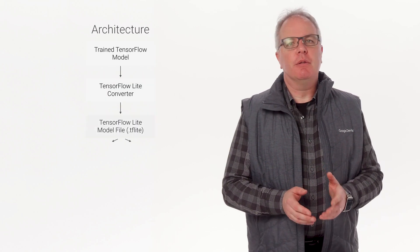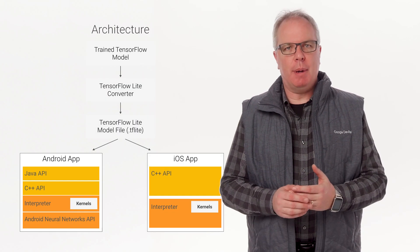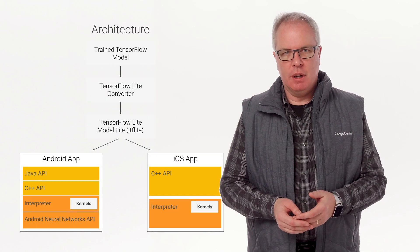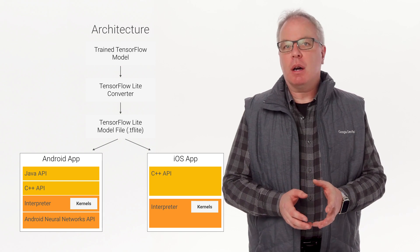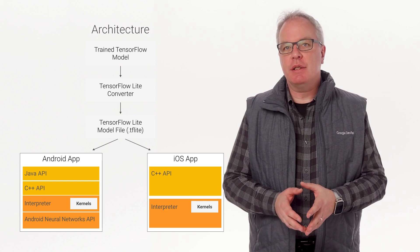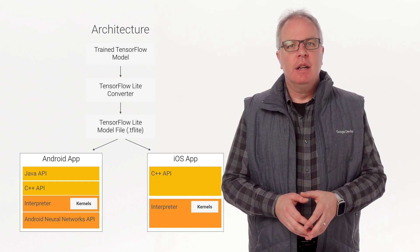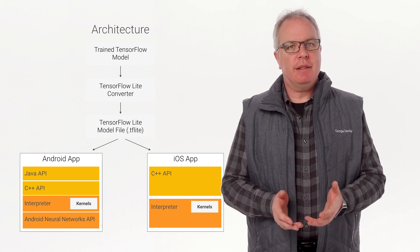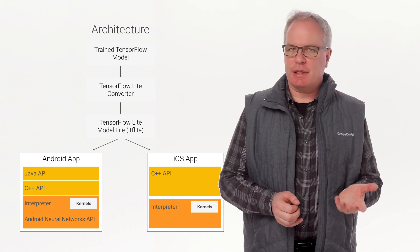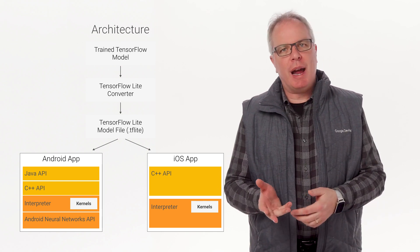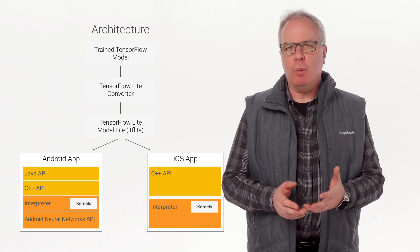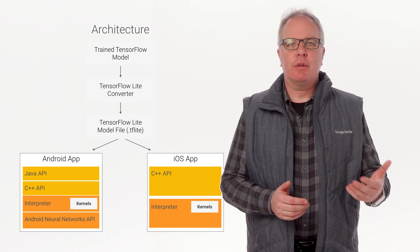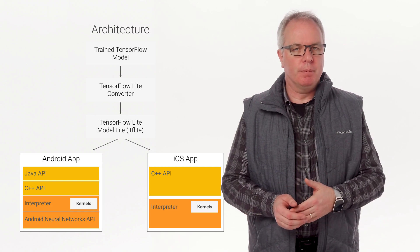TensorFlow Lite is TensorFlow's lightweight solution for mobile and embedded devices. It lets you run machine-learned models on mobile devices with low latency quickly, so you can take advantage of them to do classification, regression, or anything else you might want without necessarily incurring a round trip to the server.